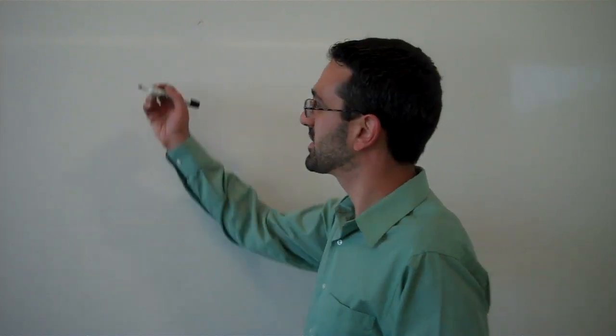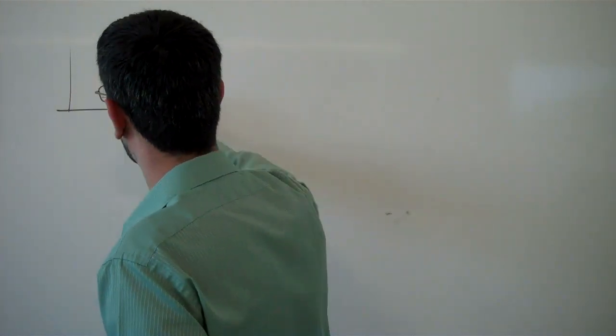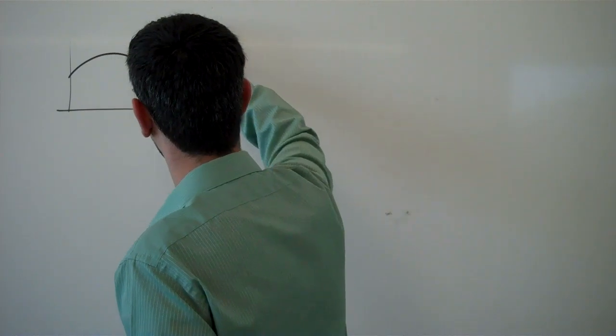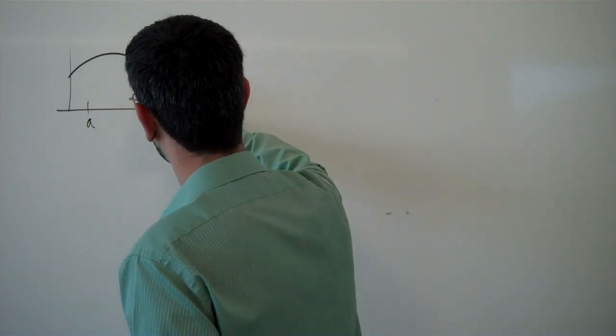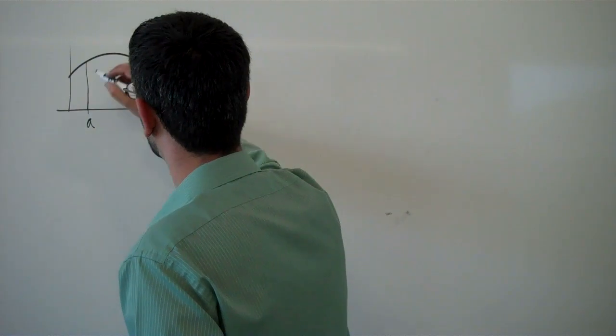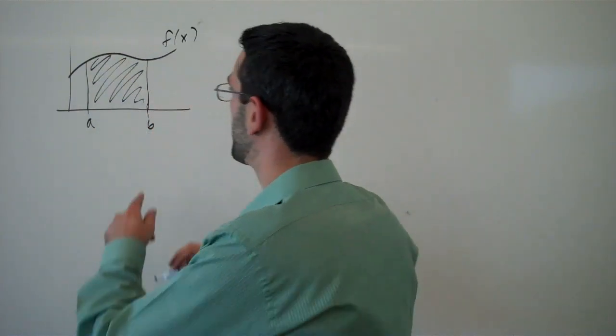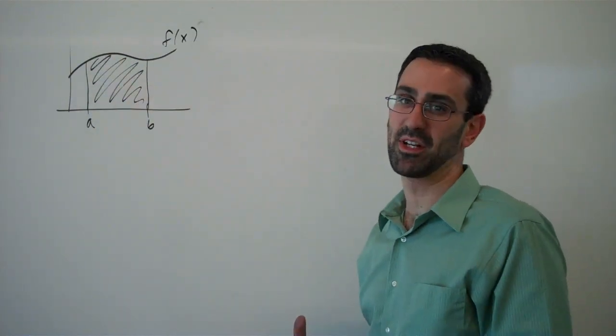So now we want to find the center of mass of a region bounded by a function. We're talking about something similar to what we did with areas, but we want to find the center of mass of an area like that. This is called a lamina.